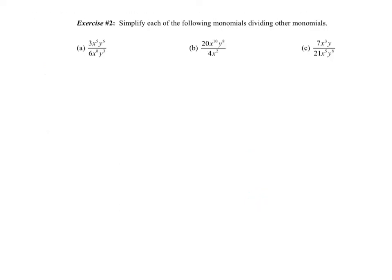Exercise 2. Now hopefully this looks familiar to you. We just kind of talked about exponents last week. So we've got three nice quick examples. Simplify each of the following monomials by dividing other monomials. Now I just want to recall why they're monomials. Basically we have one big term divided by one big term. We have no plus or minus signs.